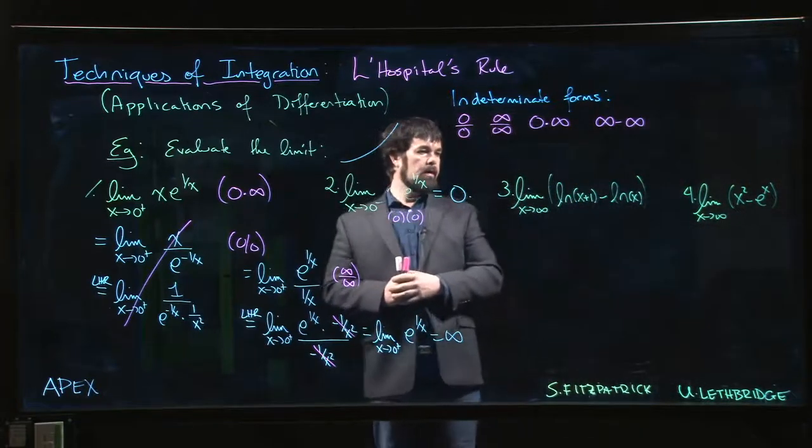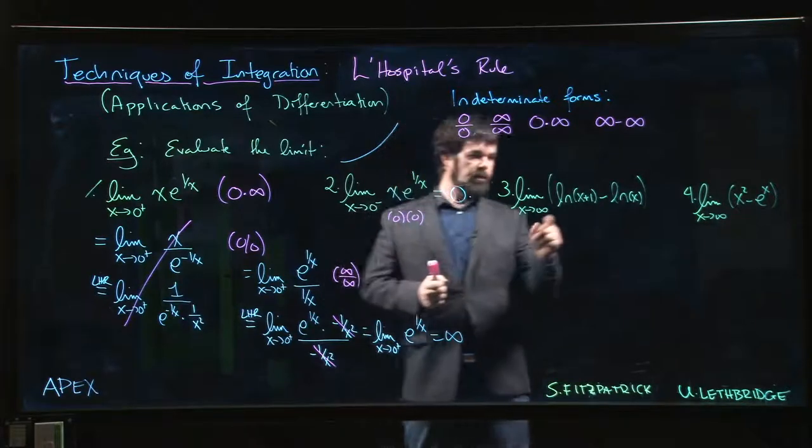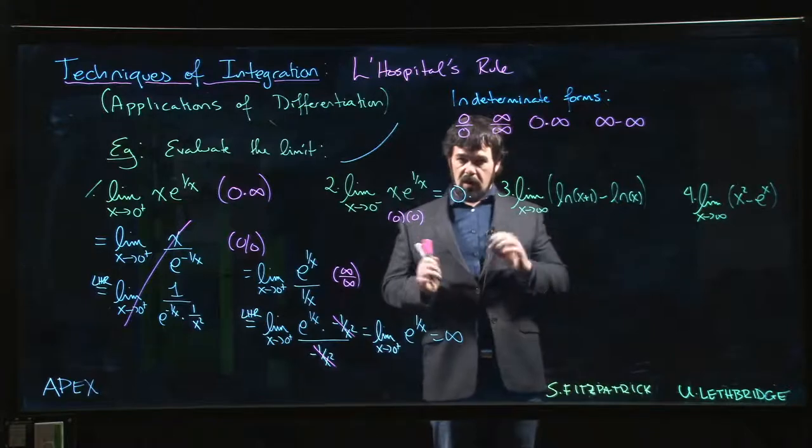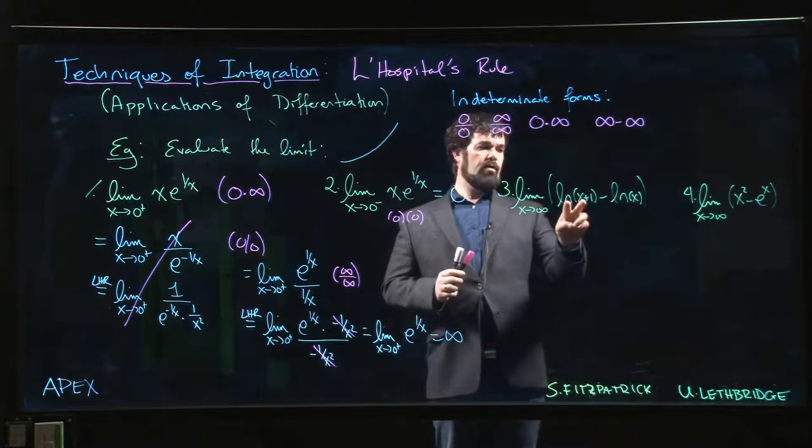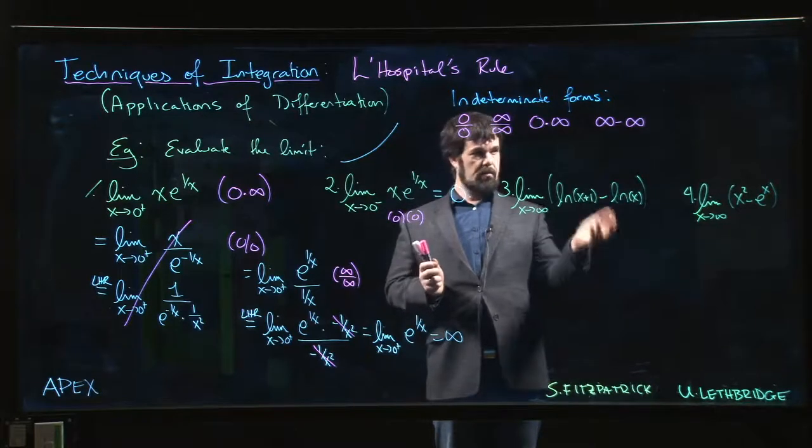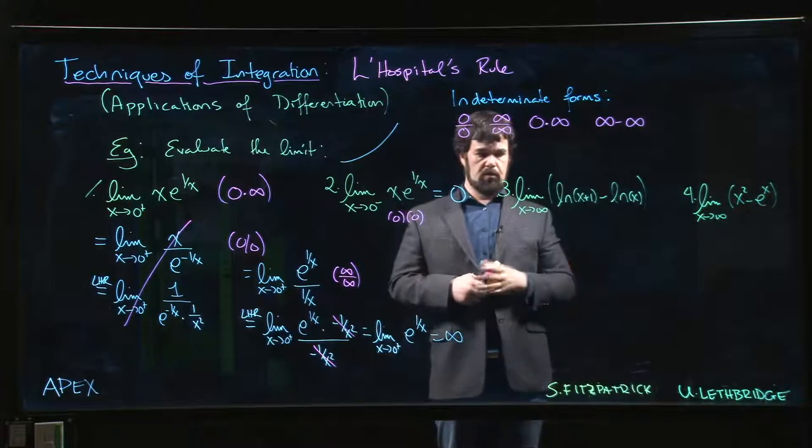Let's take a look at this third limit. Here we have the limit as x approaches infinity of the difference of two log functions: natural log of (x+1) minus natural log of x. Both of these are going to infinity. Is this an infinity minus infinity form? We've got to figure out what the value of the limit is.